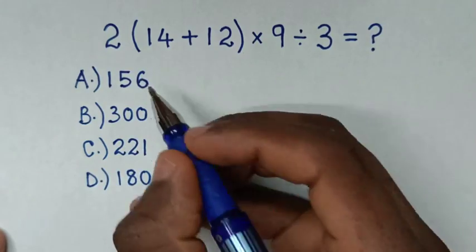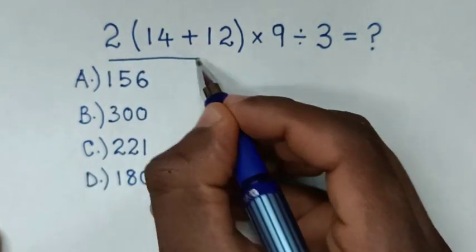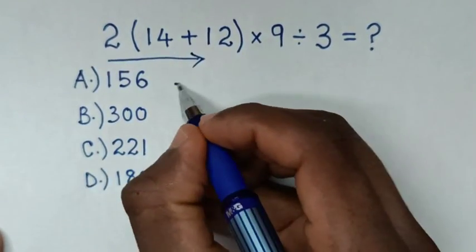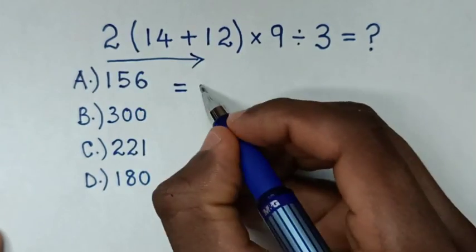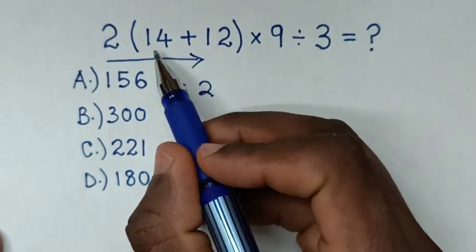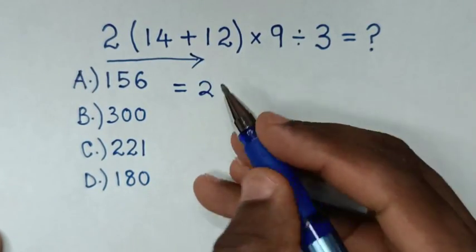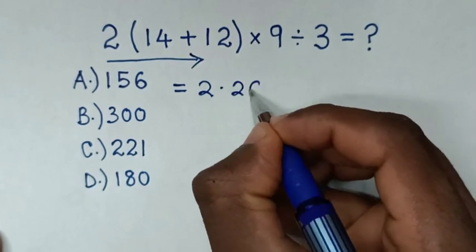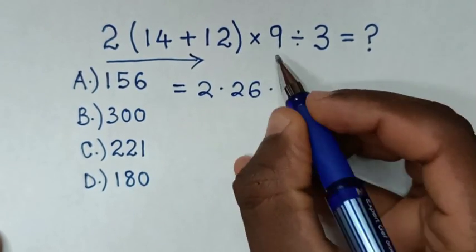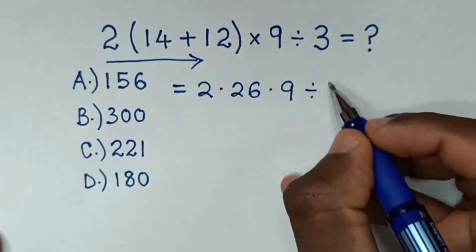From this problem, we will start working from left to right. It will be equal to 2... In the bracket, 14 plus 12 is 26, so times 26, then times 9, then divided by 3.